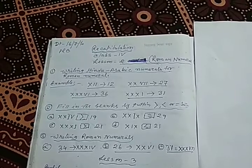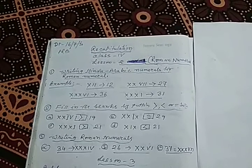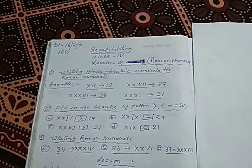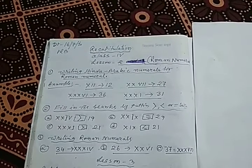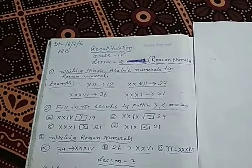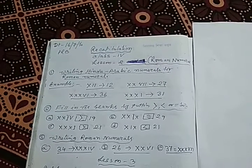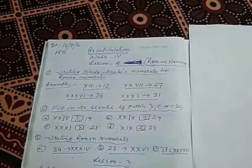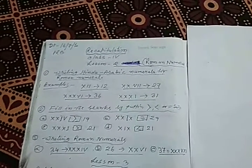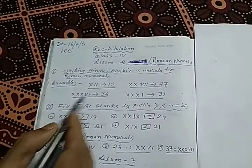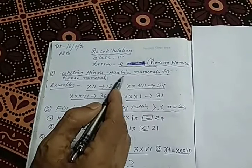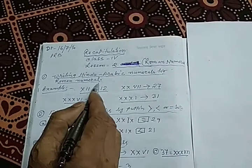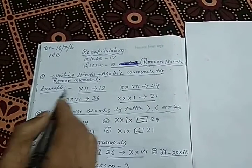Therefore, you just recap it from your classwork copy. The first item is writing Hindu-Arabic numerals for the Roman numerals. That means, a Hindu-Arabic number is to be written against the given Roman numerals.